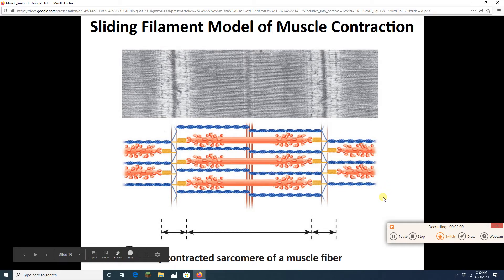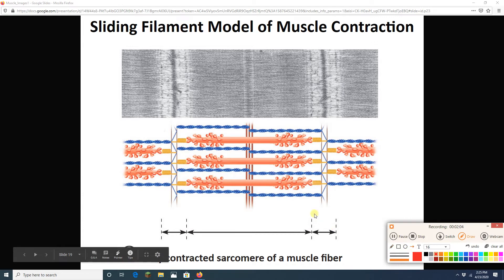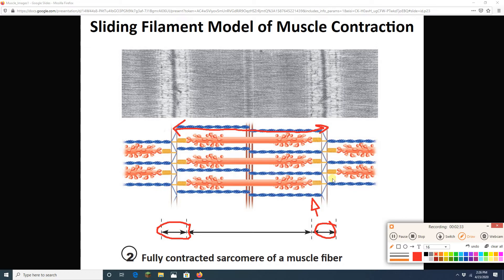Now, the actin filaments, these blue guys, have been pulled inward. The H-zone, look, where's the H-zone? The H-zone is gone. There is no more region here where we have just myosin. The H-zone has disappeared. The I-band is tiny. The sarcomere distance from Z-disc to Z-disc has gotten smaller.